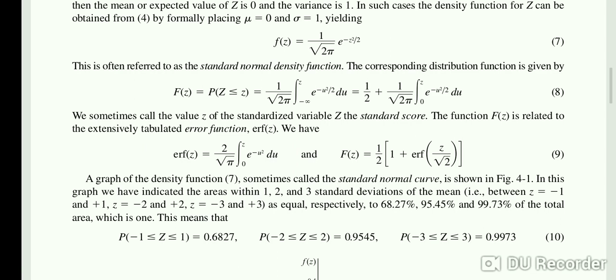A graph of the density function for equation 7, sometimes called the standard normal curve, can be shown. In this graph, we have indicated the areas within 1, 2, and 3 standard deviations of the mean, where between z equals minus 1 to plus 1, z equals minus 2 to plus 2, and z equals minus 3 to plus 3, as equal respectively to 68.27%, 95.45%, and 99.73% of the total area, which is 1.